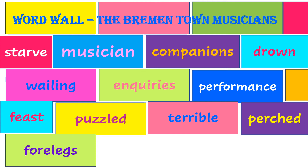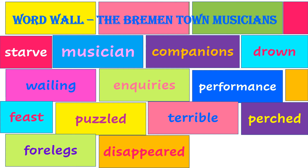Forelegs — the word fore means front, F-O-R-E, meaning disappeared. Tiptoe — to walk softly on the front, on the toes, is called tiptoe. Stumble — to almost fall while walking or running is called stumbling.